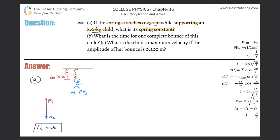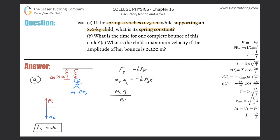They tell us the stretch of the spring and the mass of the child, and we need to find the spring constant. I'll use Hooke's Law because I have a relationship between the spring force and the weight of the child. The force the spring exerts equals negative k times delta x, and that equals the weight (mass times gravity). Solving for k: k equals mass times gravity divided by negative delta x.